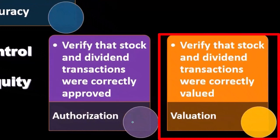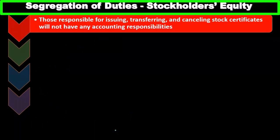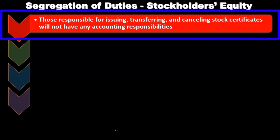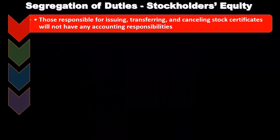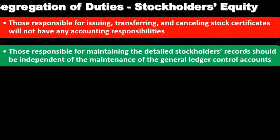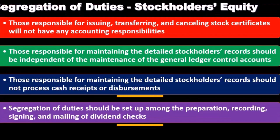The valuation assertion requires us to verify that stock and dividend transactions were correctly valued. Segregation of duties is a major internal control in relation to stockholders' equity. Those responsible for issuing, transferring, and canceling stock certificates will not have any accounting responsibility. Those responsible for maintaining detailed stockholders' records should be independent from the maintenance of the general control accounts.